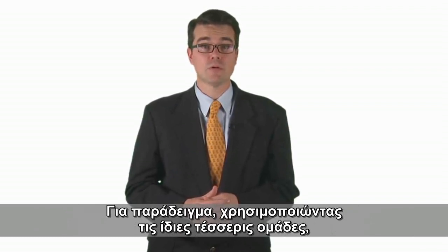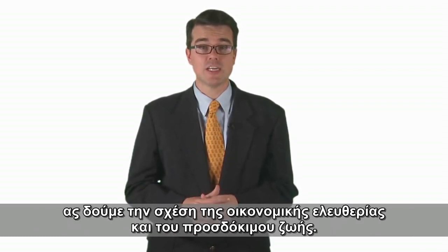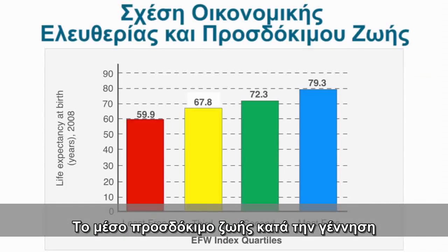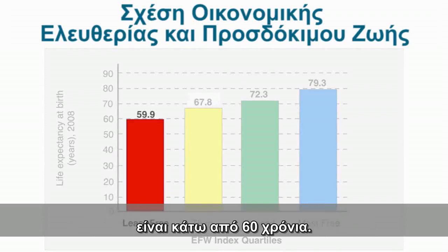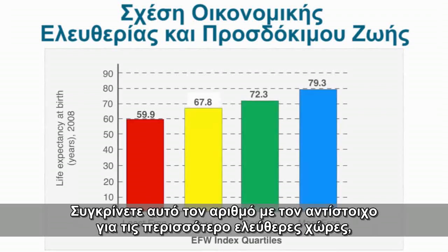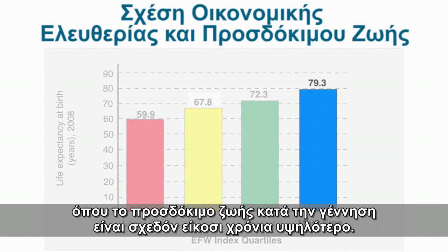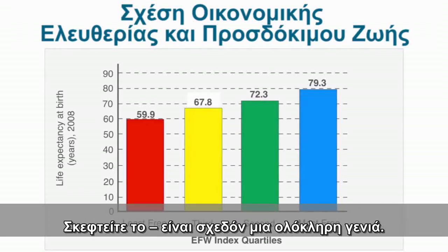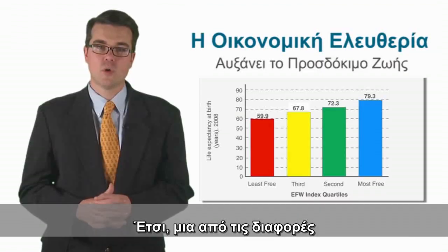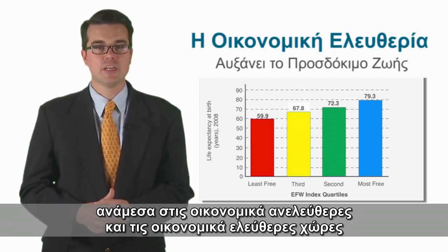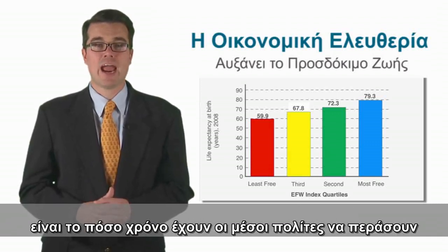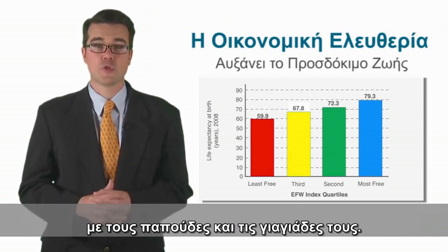For example, using the same four groups, let's look at the relationship between economic freedom and life expectancy. The average life expectancy at birth for those in the least free group is under 60 years. Compare that to the freest countries, where life expectancy at birth is almost 20 years higher. That's almost an entire generation — one of the differences between economically unfree and free countries is how much time average citizens get to spend with their grandparents.